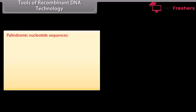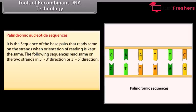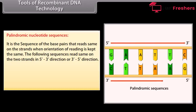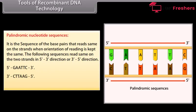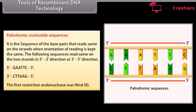Palindromic nucleotide sequences. It is the sequence of base pairs that reads the same on both strands when the orientation of reading is kept the same. The following sequences read the same on two strands in the 5' to 3' direction or 3' to 5' direction: 5'-G-A-A-T-T-C-3' and 3'-C-T-T-A-A-G-5'. The first restriction endonuclease was HindII.